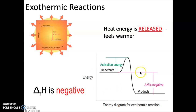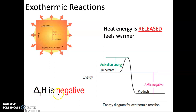The heat energy of the reactants will always be higher than the heat energy of the products, showing that the heat energy has dropped. If we look at the enthalpy change, it will be a negative value. You will need to memorize that whenever the enthalpy change — delta H — is negative, that indicates the reaction is exothermic because it has released that heat energy.